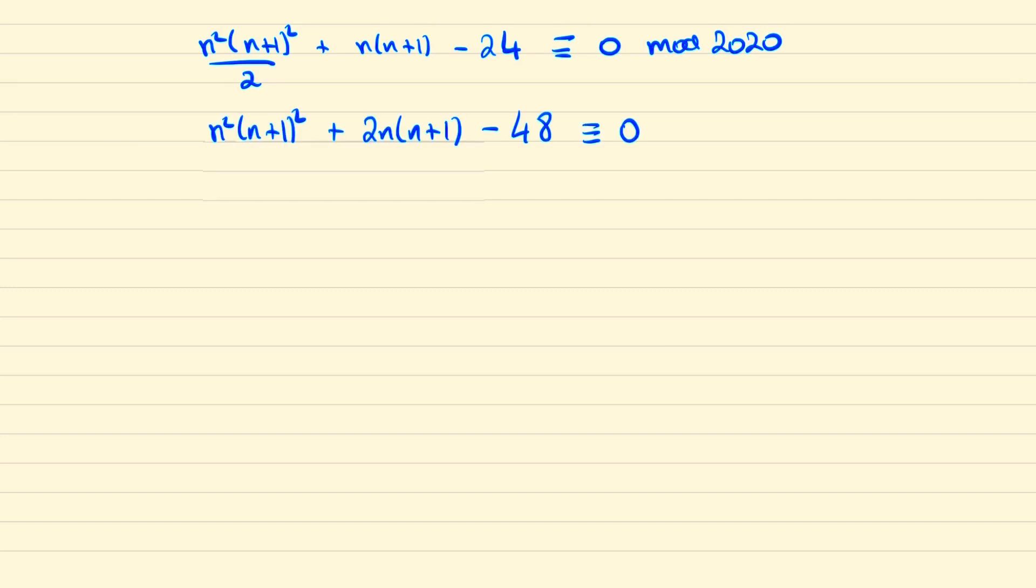We can try and factorise the first two terms so we can write that as n times n plus 1 in one bracket and n times n plus 1 in the other. And then this would be plus 1 and plus 1, and then we'll need to minus the 1 and bring back in the 48.